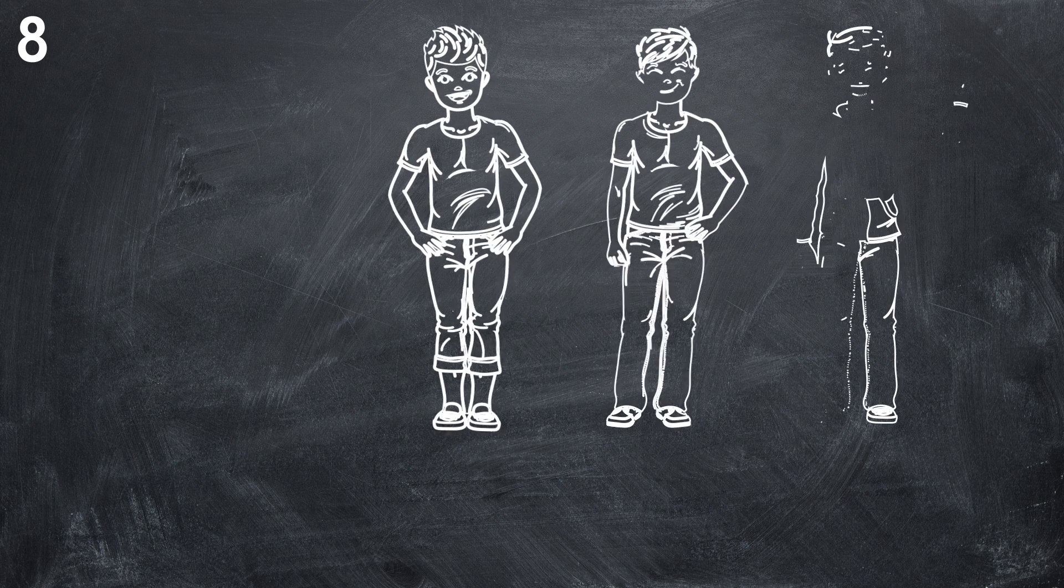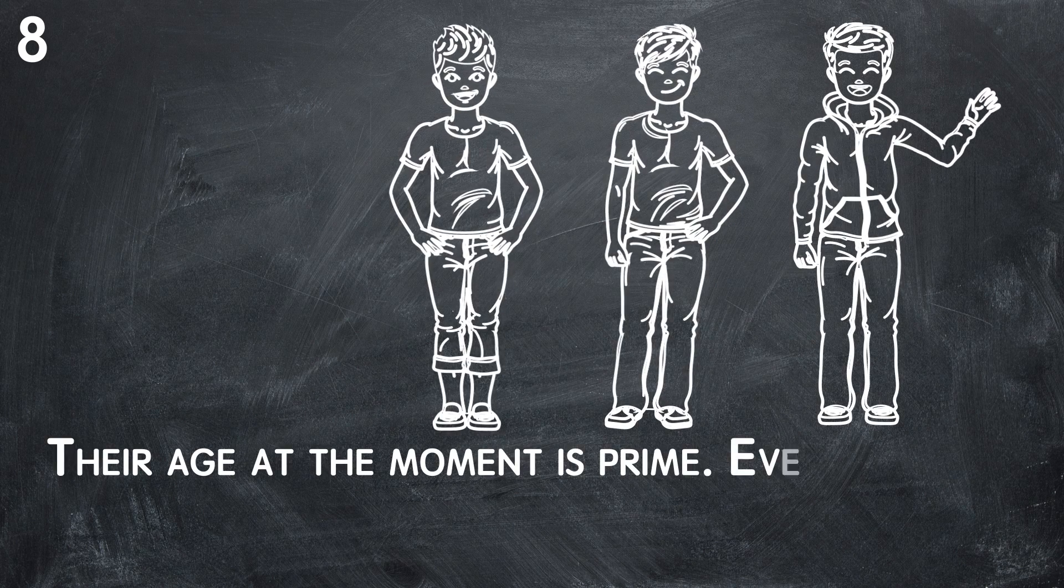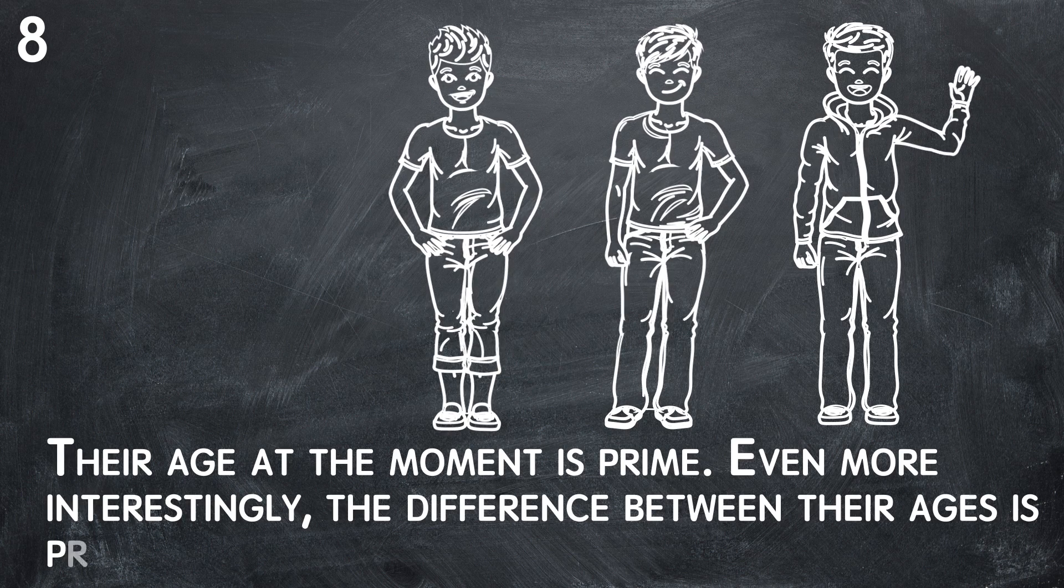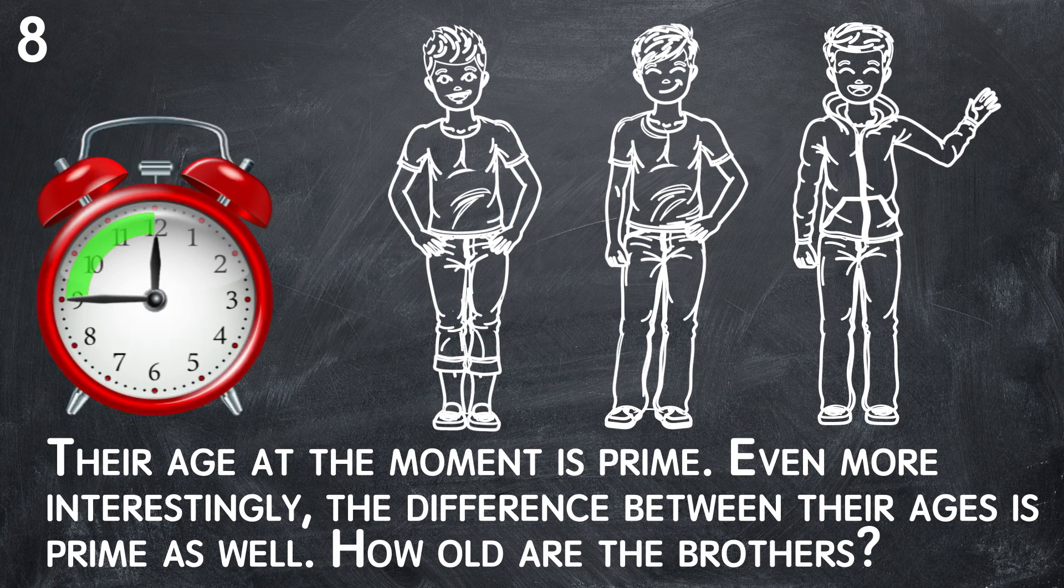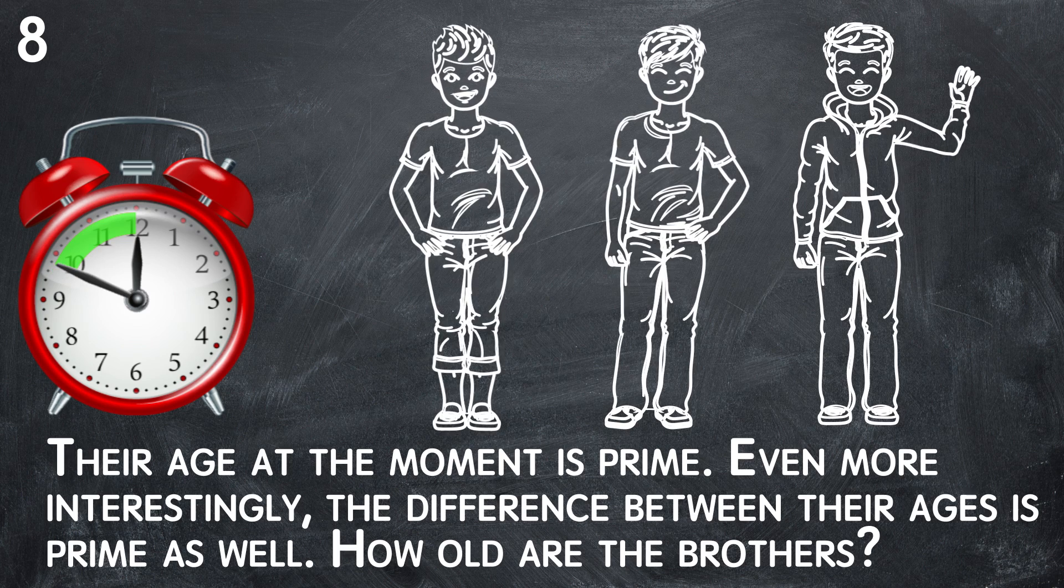8. Peter, Mark, and Sam are brothers. Their age at the moment is prime. Even more interestingly, the difference between their ages is prime as well. How old are the brothers? 15 seconds left. Gather your wits!